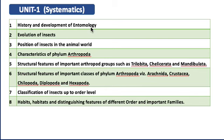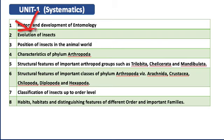In the history and development of entomology, under history you have to study the historical milestones — like when insects were first reported, who reported them in Indian or foreign literature, what the earliest records of insects are, who extensively studied insects, what different branches of entomology exist, who are the renowned persons, and when different societies were developed for the study of entomology. All those historical points are important.